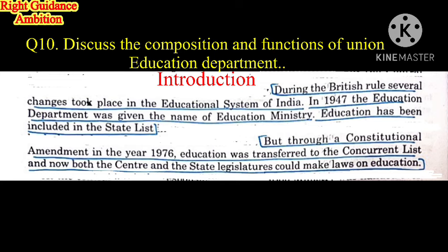Initially, education was placed in the state list, meaning that state governments could make their own laws and policies according to education. But through a constitutional amendment in 1976, education was transferred to the concurrent list.